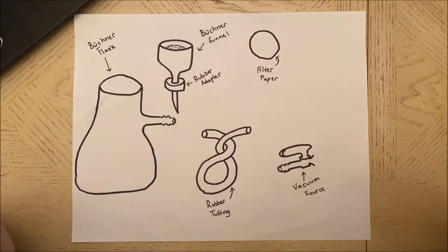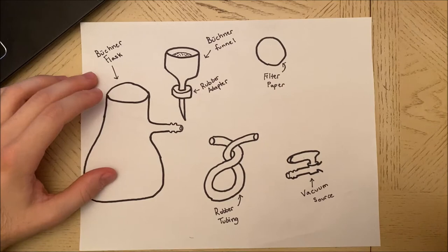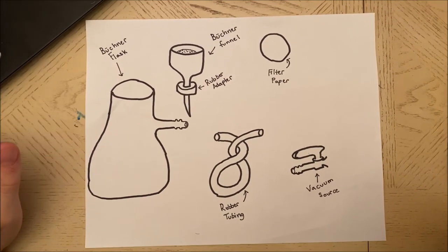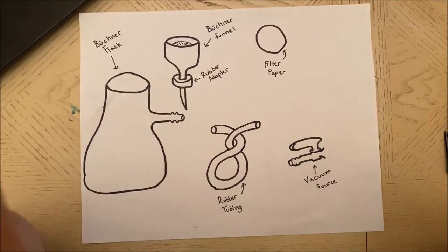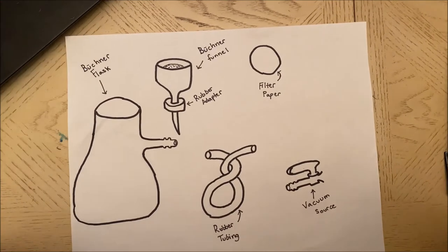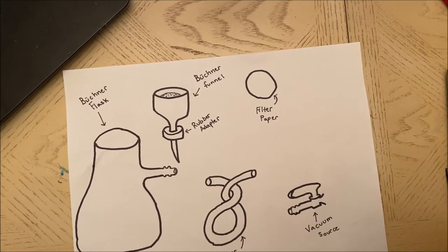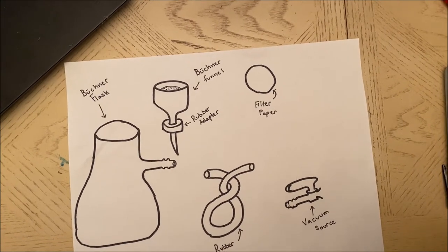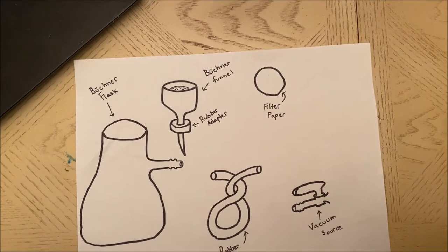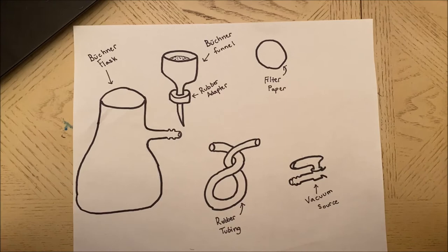So for my lab practicum I decided to explain vacuum filtration. Vacuum filtration is used primarily to collect a desired solid, and an example of this is the collection of crystals in a recrystallization procedure.